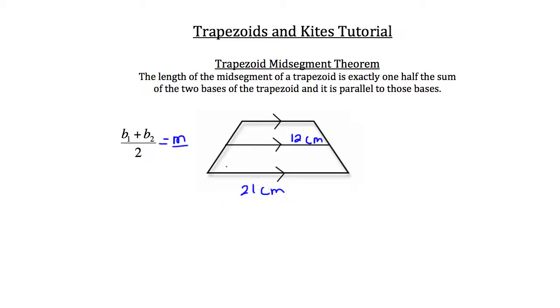So in this case the length of the mid-segment is 12, and b1 is missing the top base, but b2 is 21, and that's all divided by 2. So that's just our formula, but we've now filled in the data.